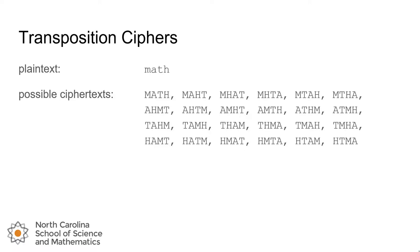Here's an example of a transposition cipher. If we have a plain text message 'math,' there are 24 possible cipher texts that could come from using different transposition ciphers. For example, a two-row rail fence — which we'll cover in the next lesson — would yield the cipher text M-T-A-H, while the three-row rail fence would give M-H-A-T. And there are many other transposition ciphers that we could use to reach each of those 24 different possible cipher texts.